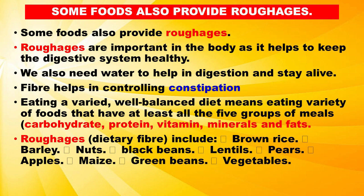Roughages, also called dietary fiber, include brown rice, barley, nuts, black beans, lentils, pears, apples, maize, green beans, and vegetables. For us to get the nutrients we need, we must include a variety of foods in our meals.